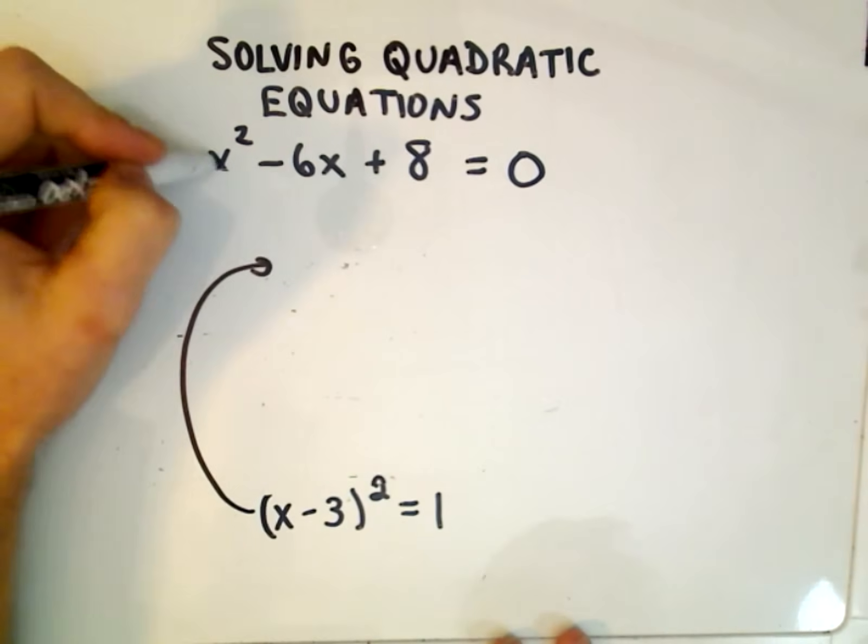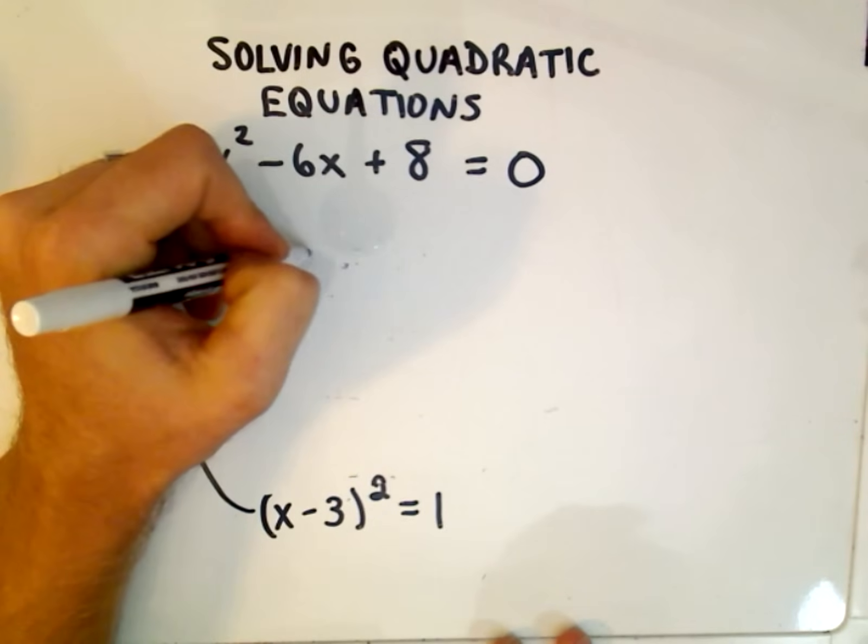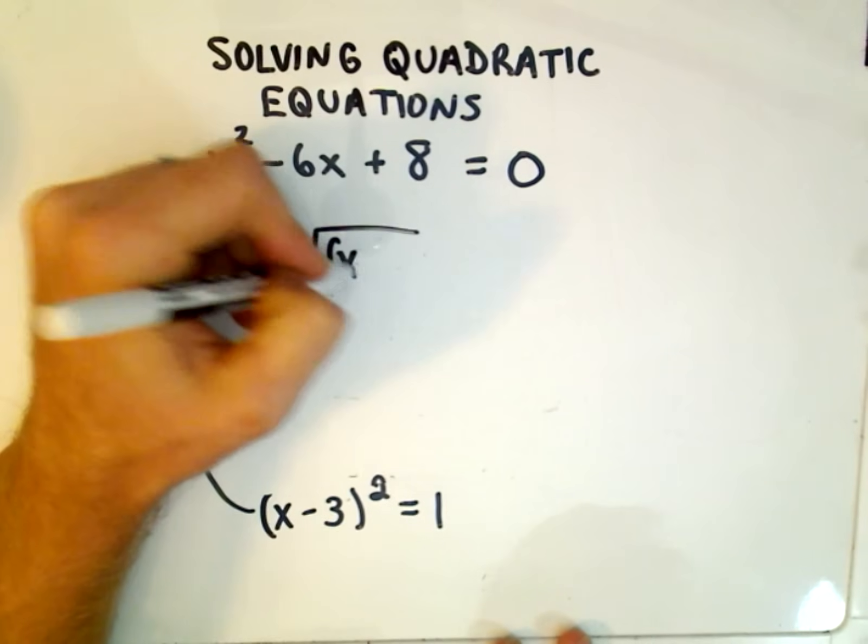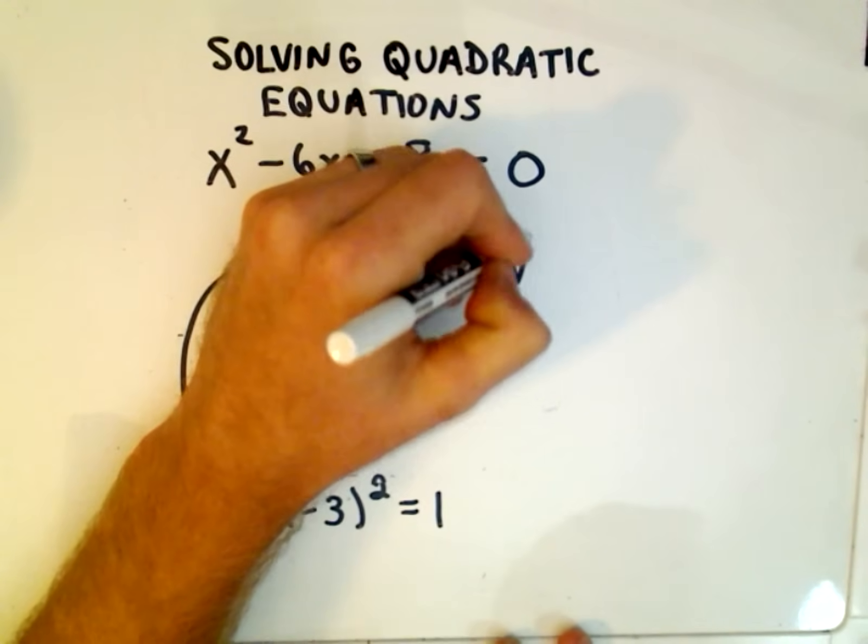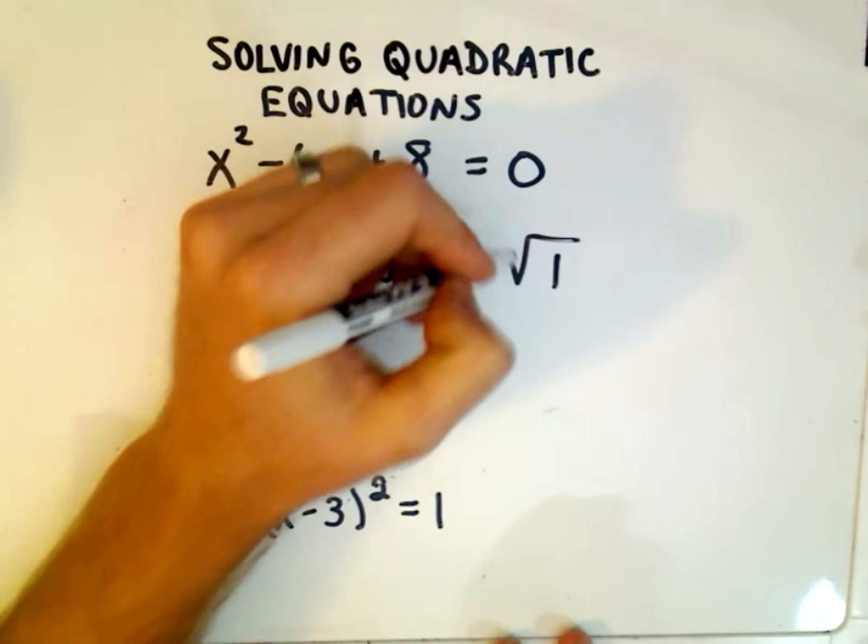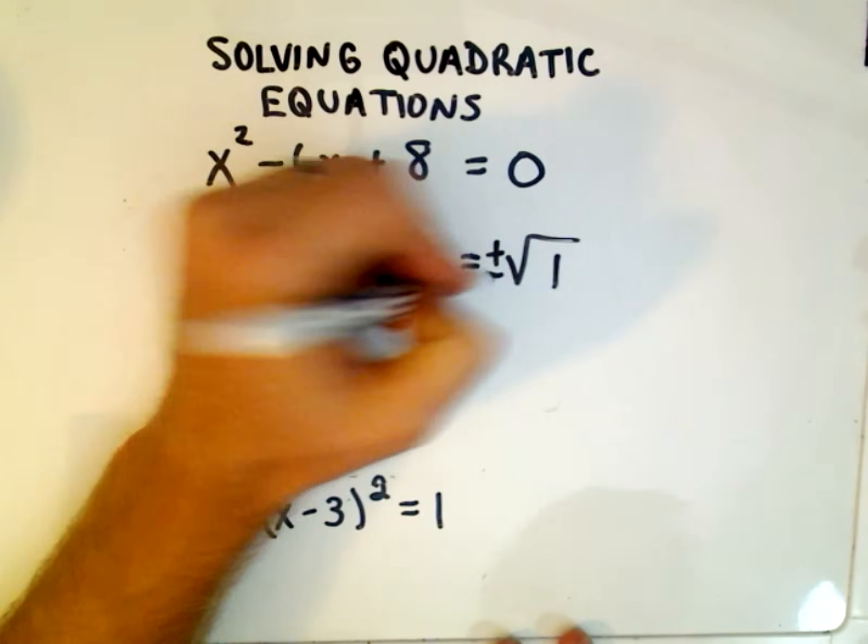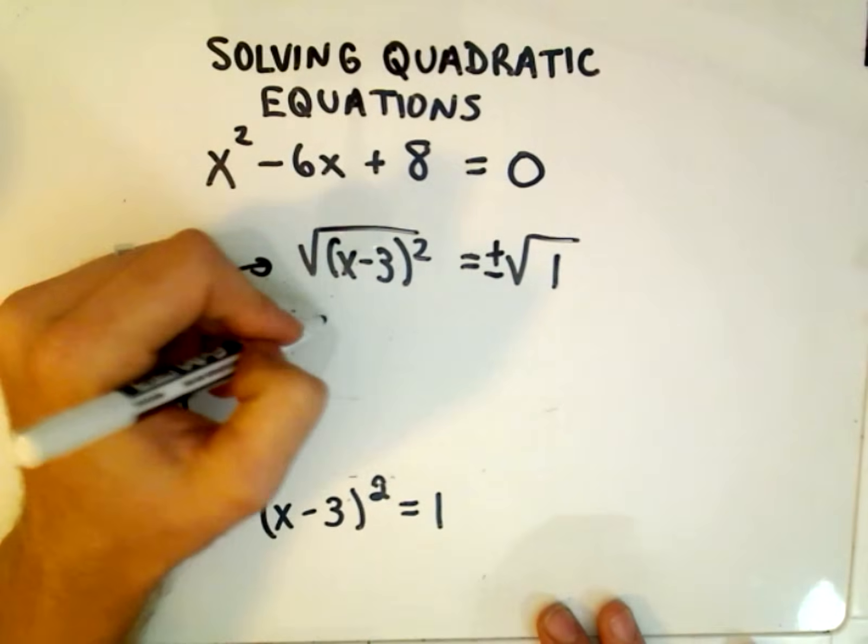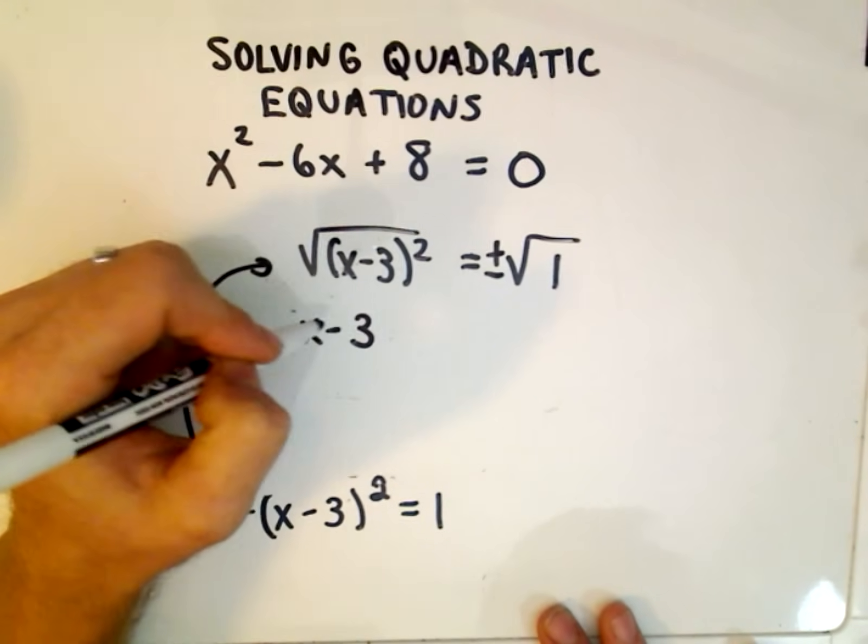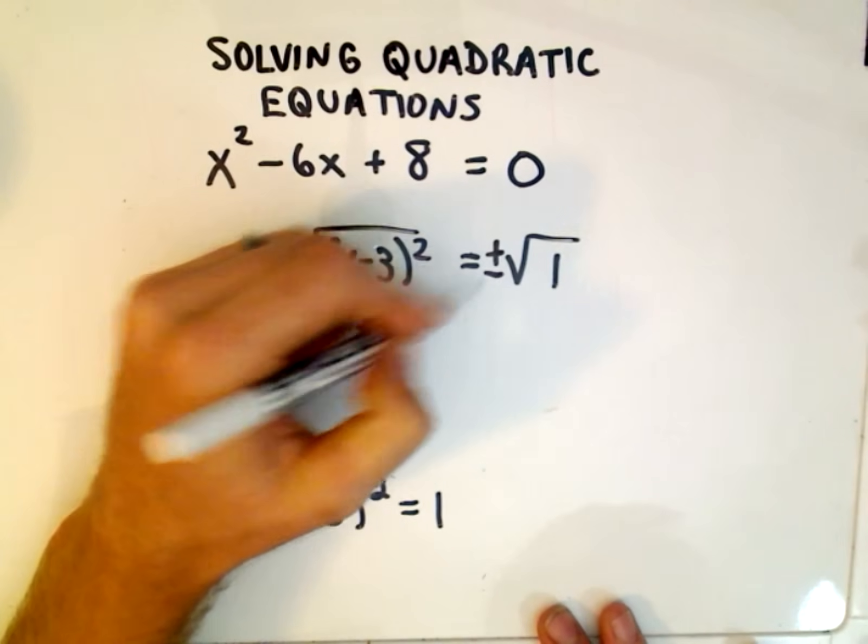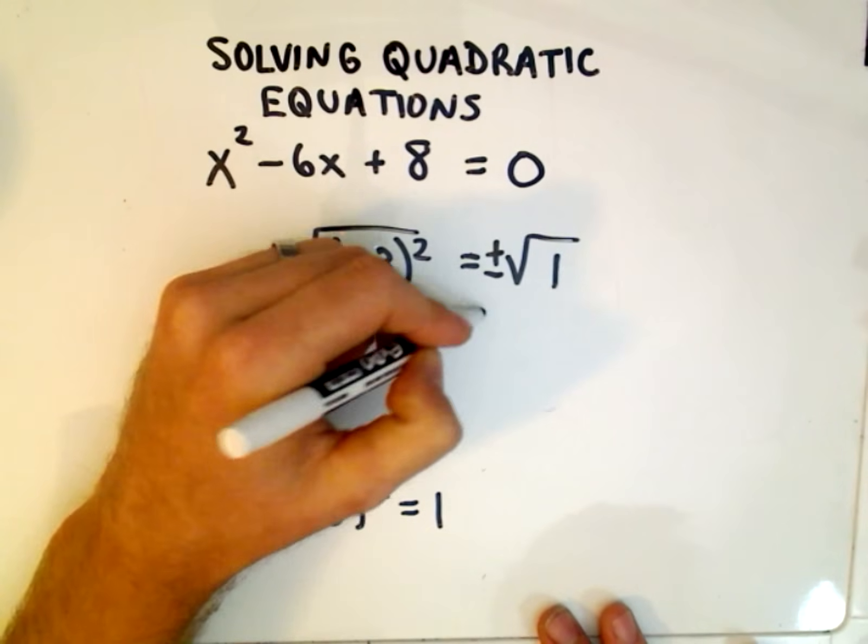Because what we're going to do is, we're going to take the square root of both sides. So if we take the square root of both sides, x minus 3 squared equals the square root of the right side. Okay, so once we take square roots, we should put a positive or negative on one side. On the left, if you take the square root of a quantity squared, we'll just get the x minus 3. And this will equal either positive or negative 1.